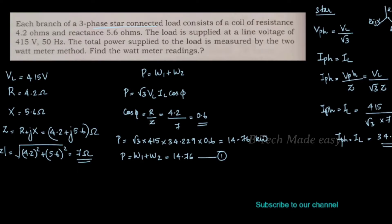If P is equal to W1 plus W2, we call it P equals √3 · VL · IL · cosφ. Also, IL equals VL divided by Z. But since this is a star-connected circuit, we use IPH equals VPH divided by Z.